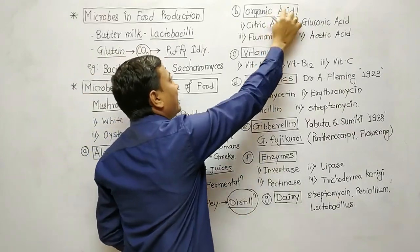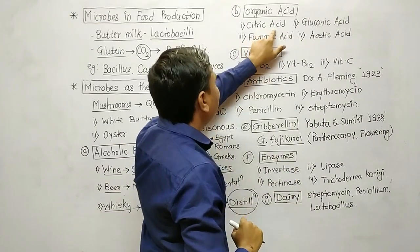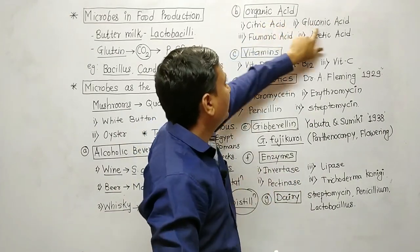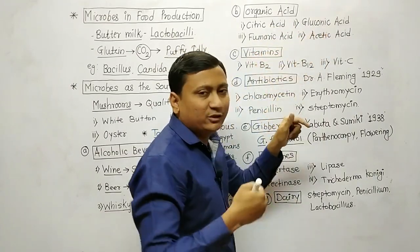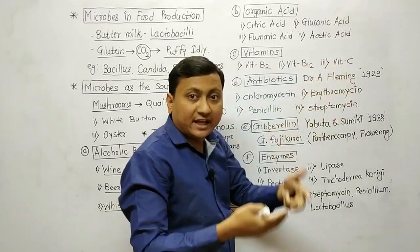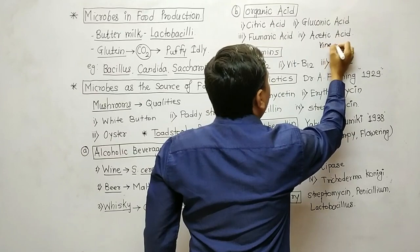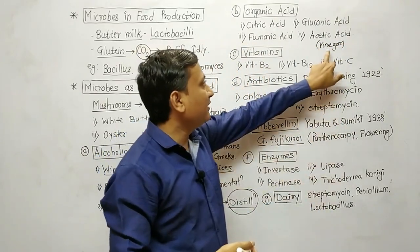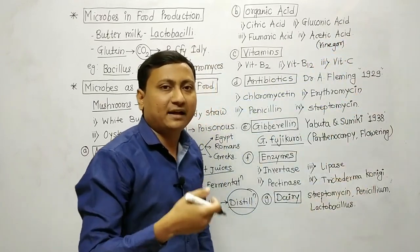The next category is organic acids. There are four organic acids. First, citric acid — produced with the help of Aspergillus niger. Second, gluconic acid — again Aspergillus niger. Third, fumaric acid — Rhizopus arrhizus. And fourth, acetic acid, which is also called vinegar, generally used in Chinese food products. Its microorganism is Acetobacter aceti.